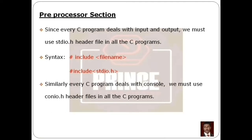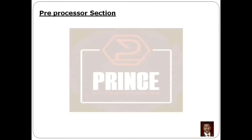Similarly, in all C programs we can use console-related functions like clear screen and getch, which are supported in conio.h. Using the same syntax — hash include preprocessor statement with angle brackets — we include conio.h. So in the preprocessor section we have two lines: hash include stdio.h and hash include conio.h.